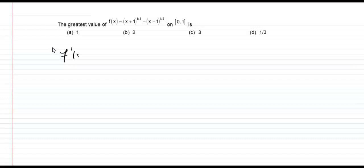f'(x) = (1/3)(x+1)^(-2/3) - (1/3)(x-1)^(-2/3).